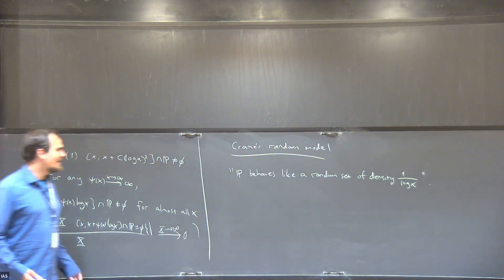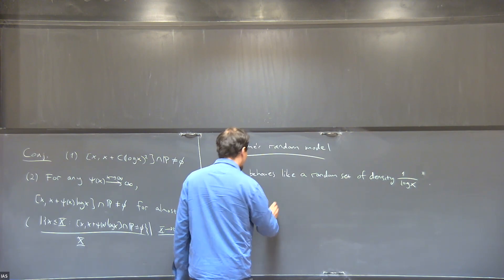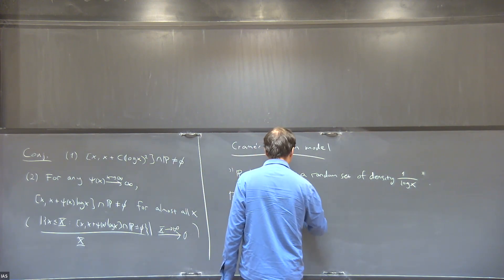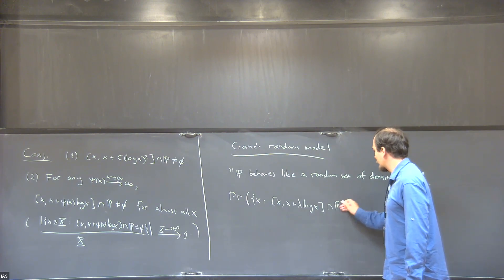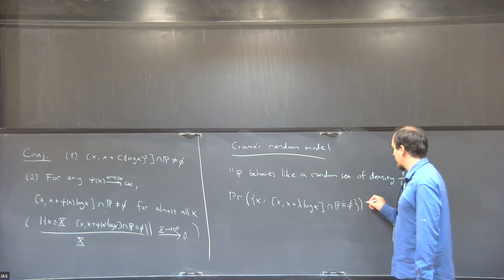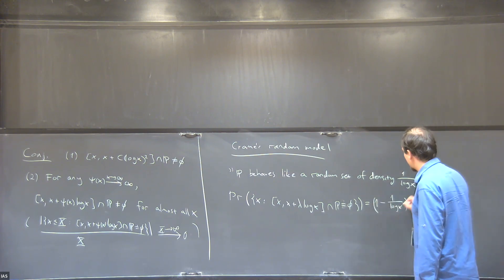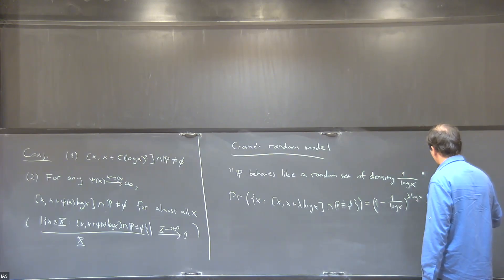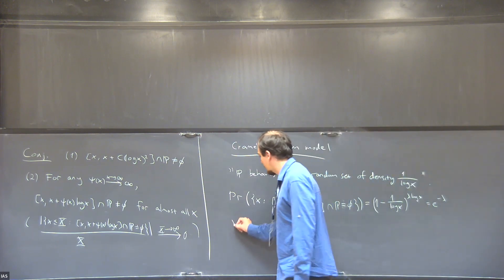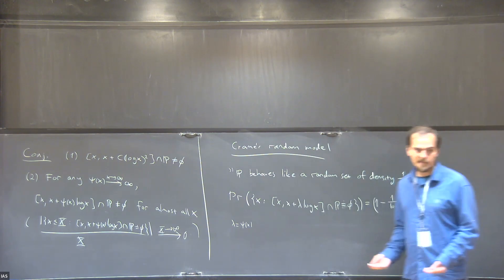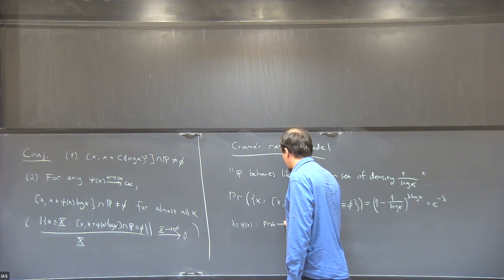If we just assume that this is true, then you can easily compute probabilities. You can compute that the probability that an interval of length lambda times log X contains no primes is, by elementary probability, if we assume this heuristic, it would be (1 - 1/log X) to the power lambda log X, which is e to the minus lambda.